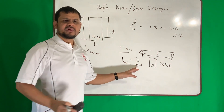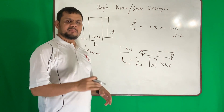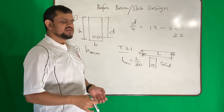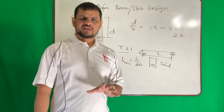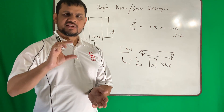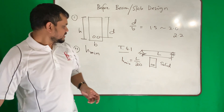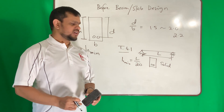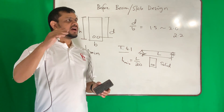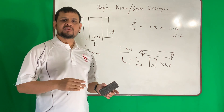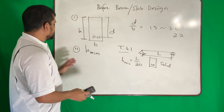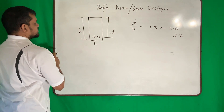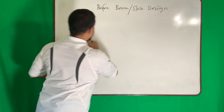Do not memorize these numbers because they change over time as ACI updates their specifications. But you need to know that there is a minimum thickness requirement to avoid vibration. If you do not maintain this, it's not a huge problem — only your slab or beam will vibrate.